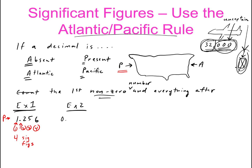Example two: 0.00201. Is a decimal point present? Yes. So we start counting from the Pacific side. Is this a zero? Yes, so it doesn't count. These zeros don't count — doesn't count, doesn't count. There's a 2, which is not a zero, so it counts. We begin counting here: 1, 2, 3. So this number has 3 sig figs.